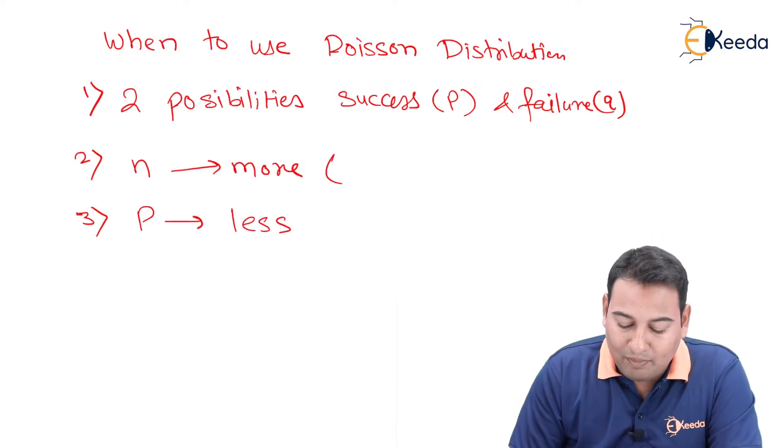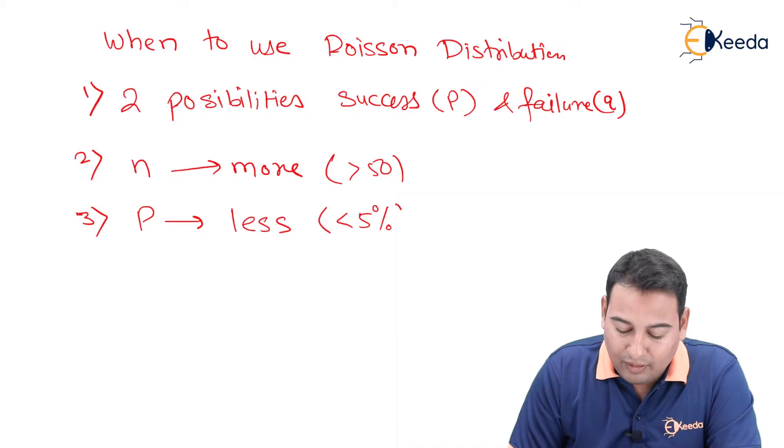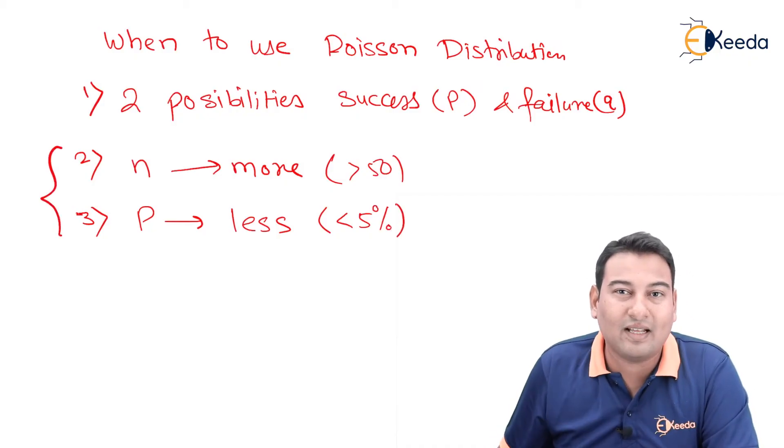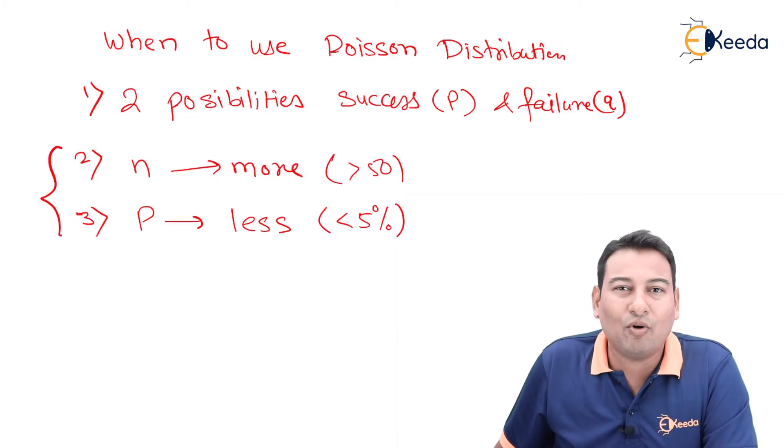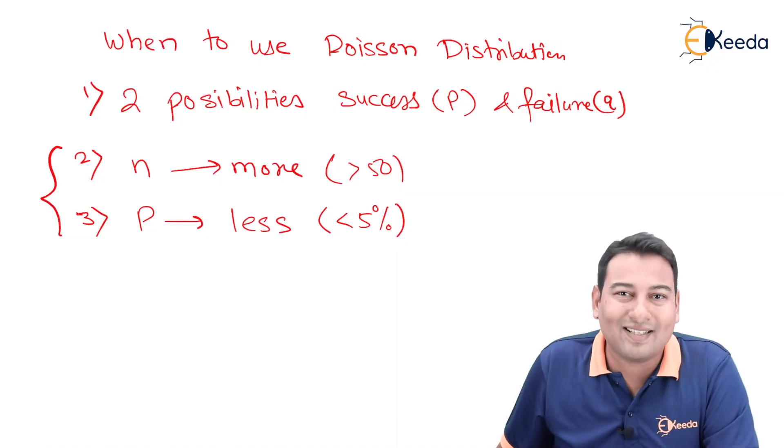More means you can say greater than 50% in general. Less you can say less than 5%. This is not a hard and fast rule - greater than 50 or less than 5, we are just taking our assumptions. It depends upon the problem. All the factors in the problem will decide whether the problem is of Poisson distribution or not.